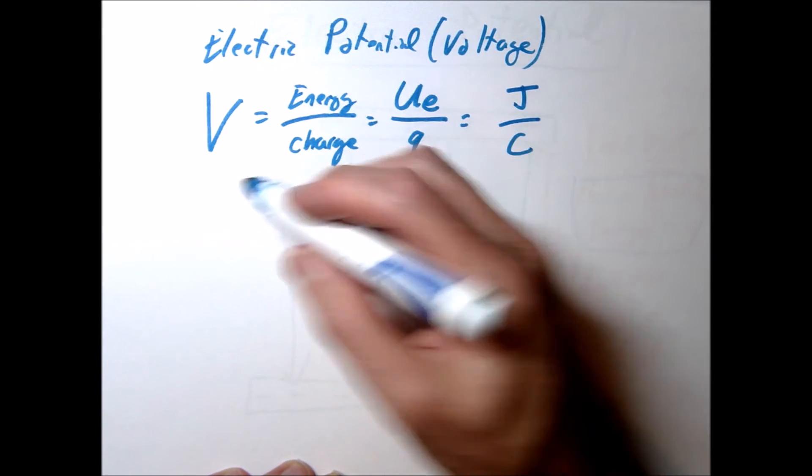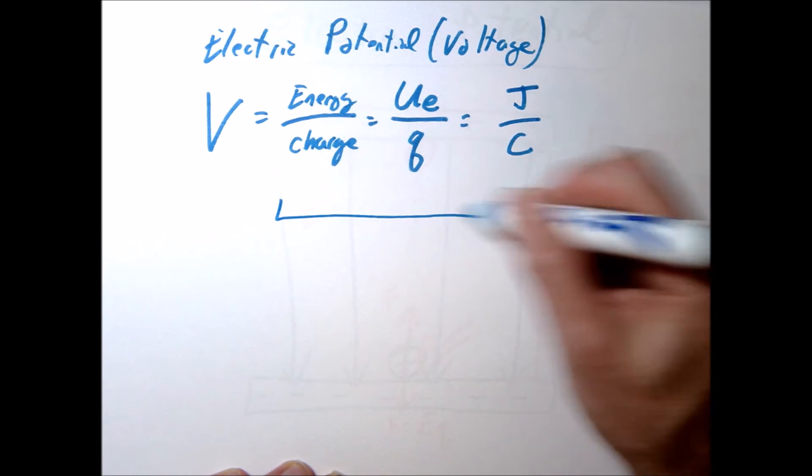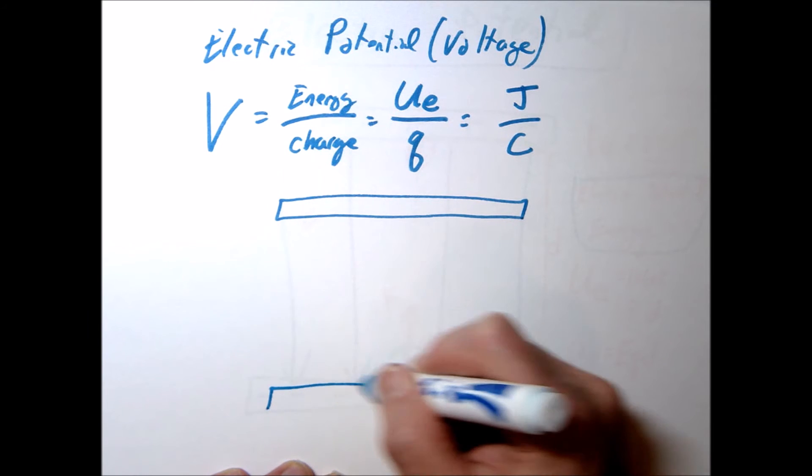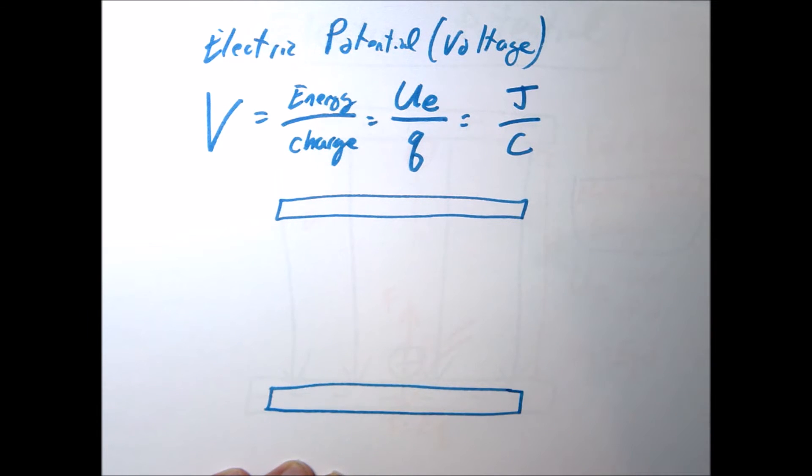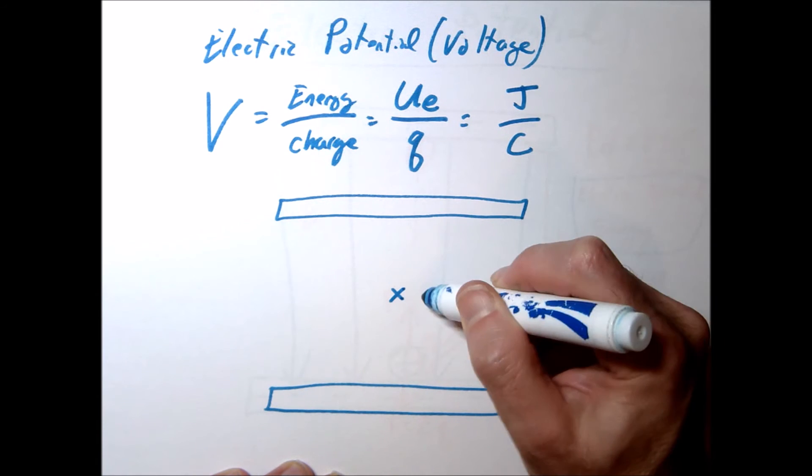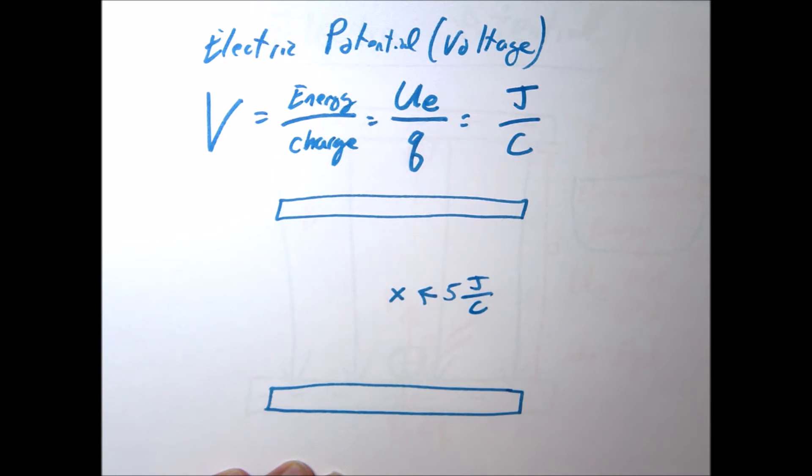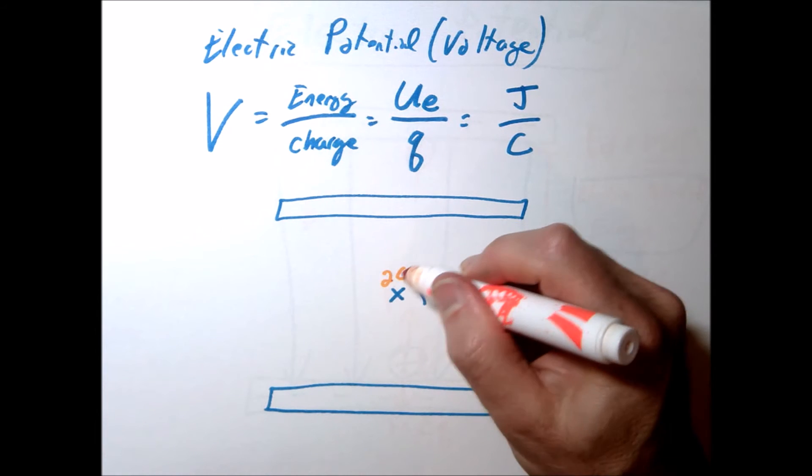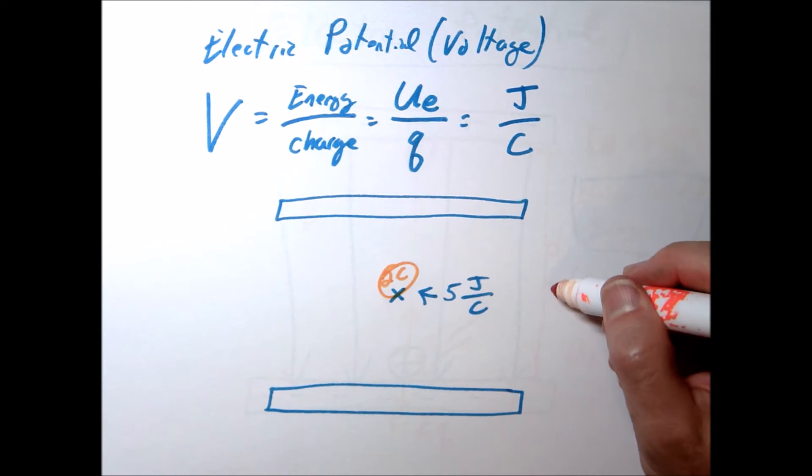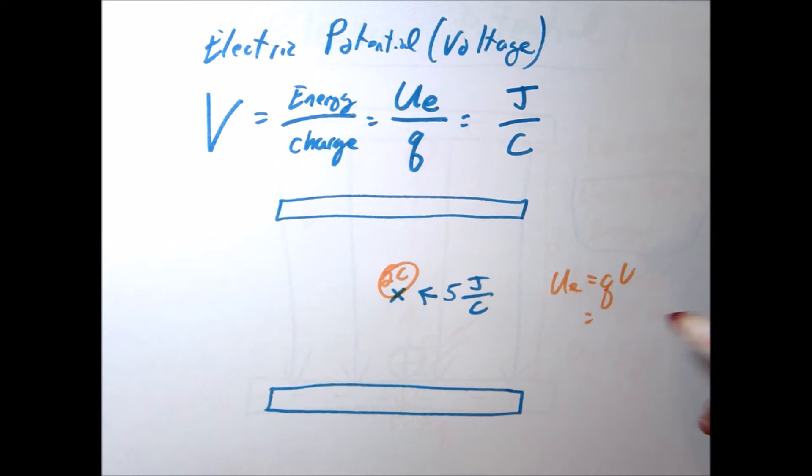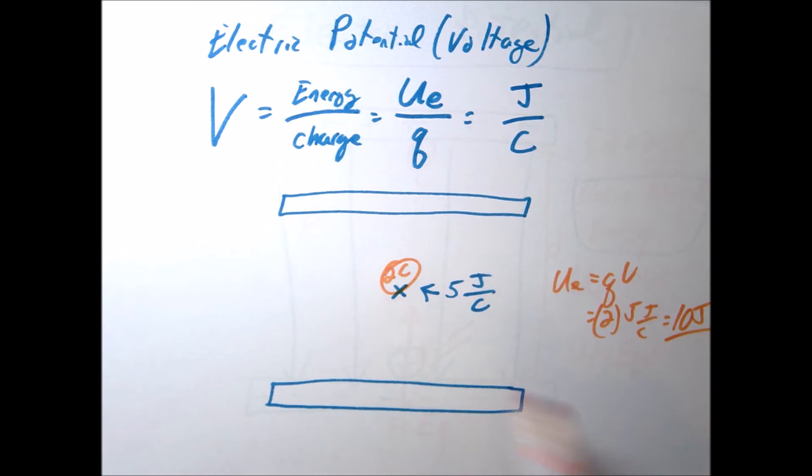So for example, if I have a region, say, let me go back to my parallel plates. Let's say right here, at this location, there happens to be five joules per coulomb of electric potential. Well, if I were to put a charge, let's say of two coulombs, so if I put a two coulomb charge right here, it's going to now take on two coulombs times five joules per coulomb, right, it's going to take on 10 joules of energy. So it would have 10 joules of potential energy.